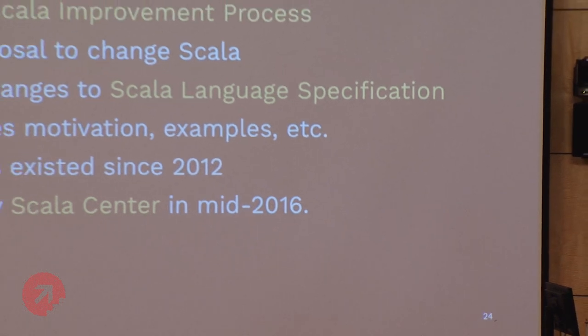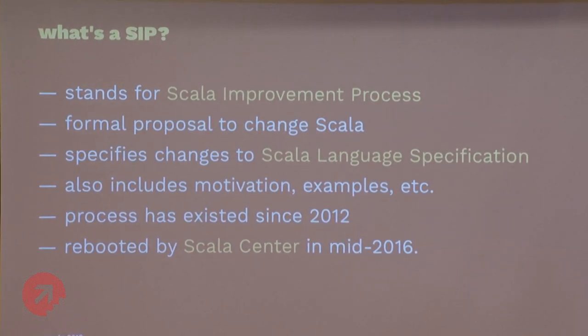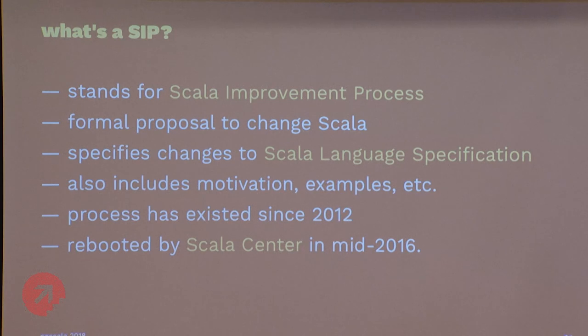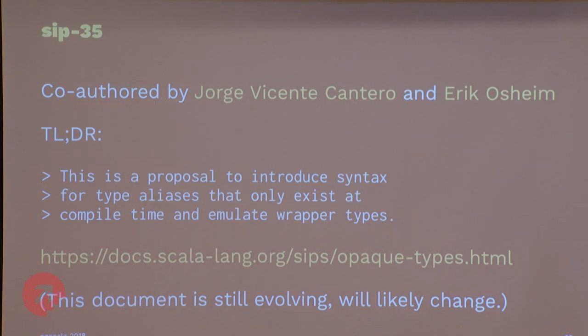So here we go — SIP 35. SIP stands for Scala Improvement Process — formal proposals to change the Scala language. They include changes to the Scala language specification, plus motivation and examples. The process has been around since 2012, rebooted in mid-2016. The SIP is co-authored by Jorge Vicente Cantero and myself. The TLDR is: a proposal to introduce syntax for type aliases that only exist at compile time and emulate wrapper types. If you want to read the actual document, the current version is linked in the slides.